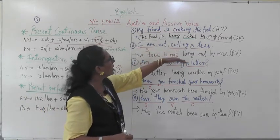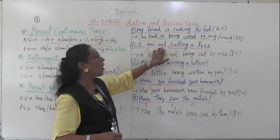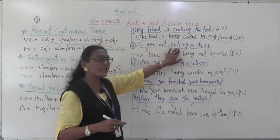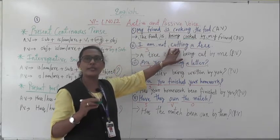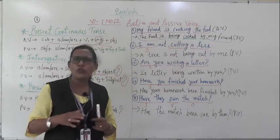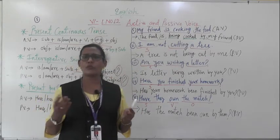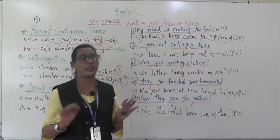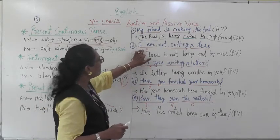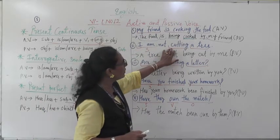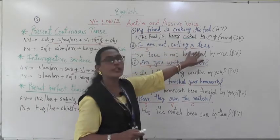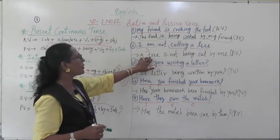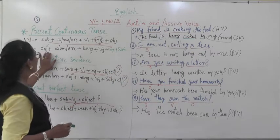Second example: 'I am not cutting a tree.' Here 'not' is there, so this is a negative sentence, but continuous tense is there too. For negative sentences, 'not' simply comes along — nothing else changes. Subject is 'I,' verb is 'cutting,' object is 'a tree.' In passive, object 'a tree' comes first, then the helping verb 'is' for present tense.